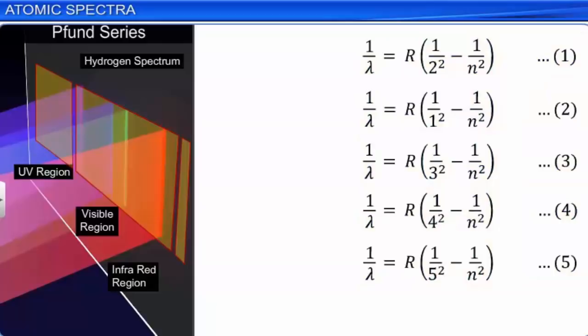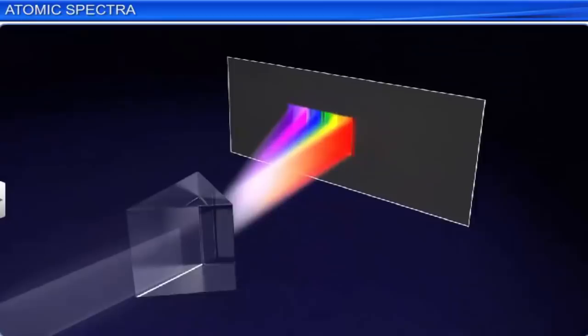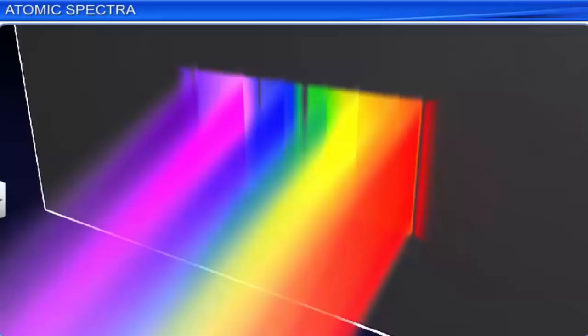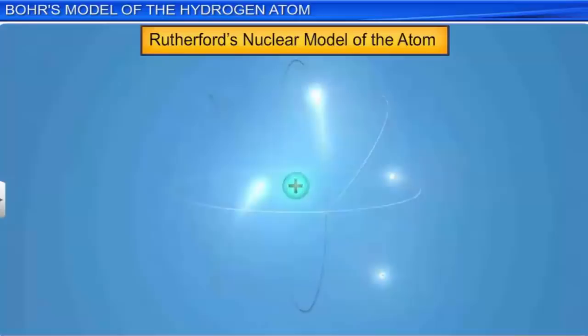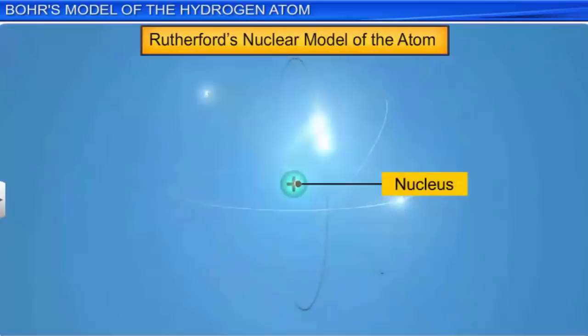Rutherford's nuclear model of the atom postulates that electrons revolve around the nucleus, which contains the total positive charge of the atom. However, it could not explain certain other facts. Let us now look into the drawbacks of Rutherford's atomic model.